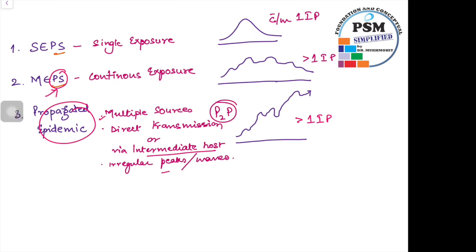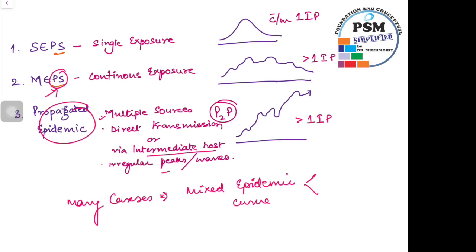The shape of the epidemic curve — whether it is SEPS, MEPS, or propagated — will generally give you an understanding of the pattern of spread. However, in many cases there is a mixed epidemic pattern. What is a mixed epidemic? It usually contains two things: a common source or point source with multiple exposures, and also a propagated epidemic component.